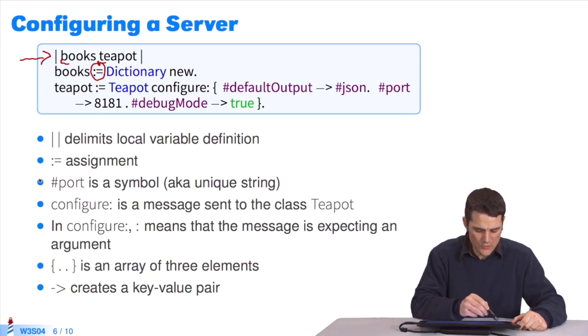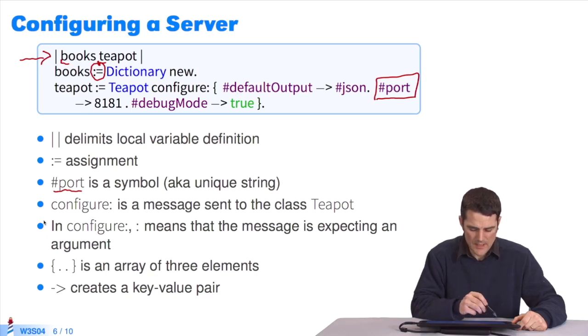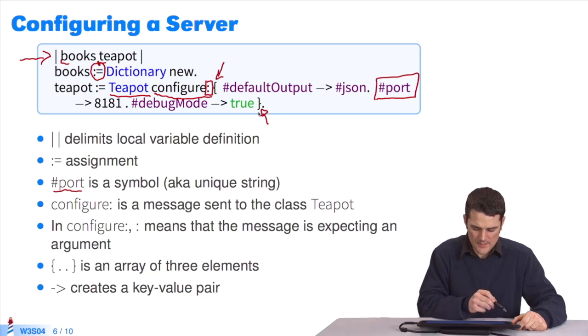You can have symbols. Thirdly, there is hashtag port, which is located here in the code. It corresponds to a symbol, a unique string. It's created only once. There are messages sent to the class teapot. For example, the class teapot is here, and I can send the message configure to it. Look at configure. Let me remind you that colon marks the presence of an argument, which you send to this method. The argument starts with a brace and ends with a brace. So what's between the braces is a dynamic array.